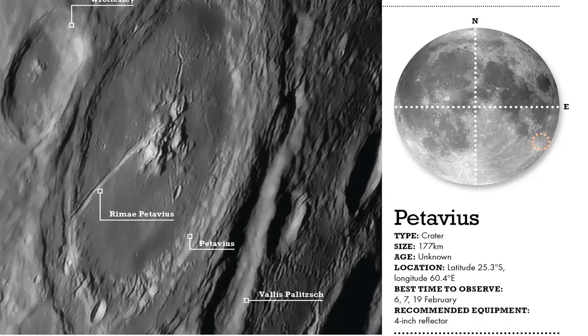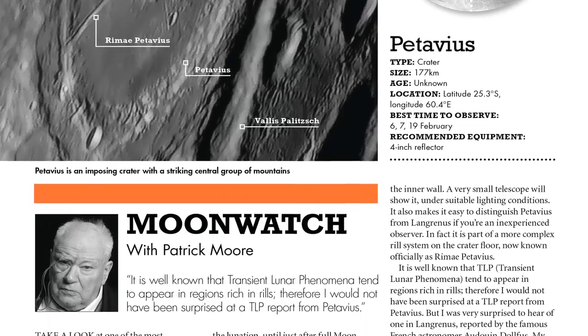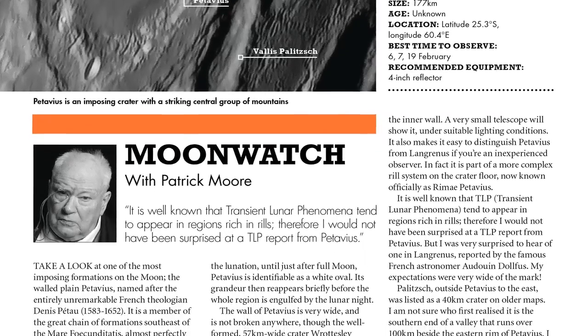Well, I hope these little experiments have demonstrated a bit of the science behind what you're seeing when you observe the moon. If you're interested in learning more about what objects to look at on the moon each month, then you can read Sir Patrick Moore's Moonwatch column in every issue of Sky at Night magazine. But, from me, that's all, clear skies, and I'll see you again next month.